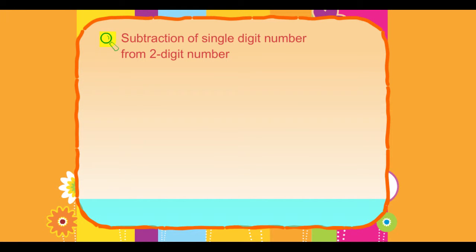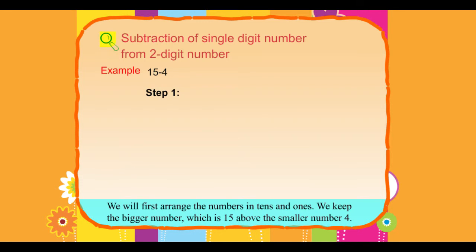Subtraction of single-digit number from two-digit number. Example: 15 minus 4. Step 1 — We will arrange the numbers in 10s and 1s. We keep the bigger number, which is 15, above the smaller number 4. Step 2.